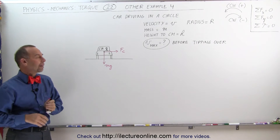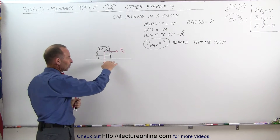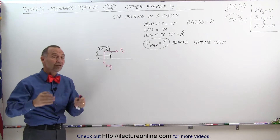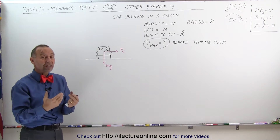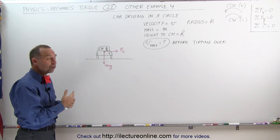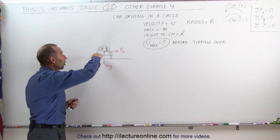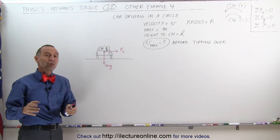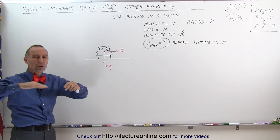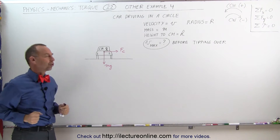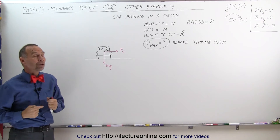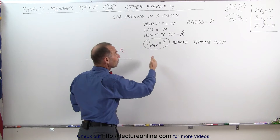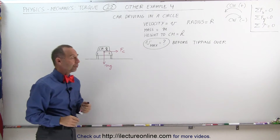One of two things can happen. If there's not a lot of friction between the tires and the road, the car will simply slip off the road. But if there's plenty of friction — dry conditions, good quality tires — driving too fast can actually cause the car to flip over. This is especially true when you have trucks that have a heavy load where the center of gravity is pretty high. What we're trying to do here is find the maximum velocity that the car can drive before it will tip over.